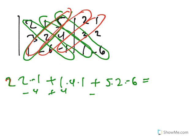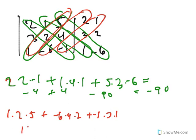Plus 4, minus 90. So we get negative 90. Not done yet. Now let's take the red diagonals and do the same thing. 1 times 2 times 5, plus negative 6 times 4 times 2, plus negative 1 times 3 times 1. And we get 10, minus 48, minus 3, which becomes minus 41.